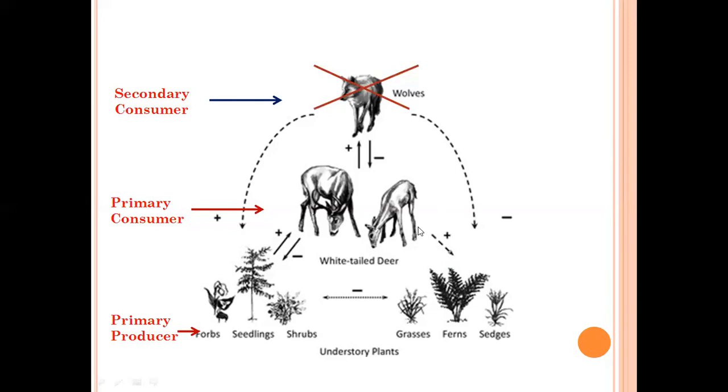So therefore, a keystone species is a species which plays an important role in maintaining the structure and function of a habitat or an ecosystem, without which the ecosystem will collapse. Now I hope you understand what is a keystone species.